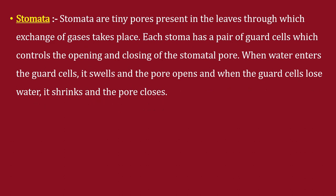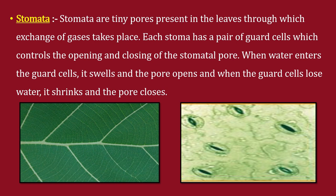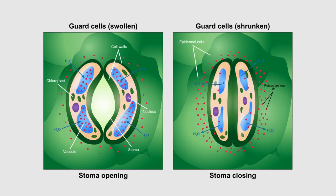Stomata are tiny pores present in leaves through which exchange of gases takes place. Each stoma has a pair of guard cells which control the opening and closing of the stomatal pore. When water enters the guard cells, they swell and the pore opens; when guard cells lose water, they shrink and the pore closes. You can see the guard cells swollen with water causing the stomata to open, and in the next picture, the shrunken guard cells with the stomata closed.